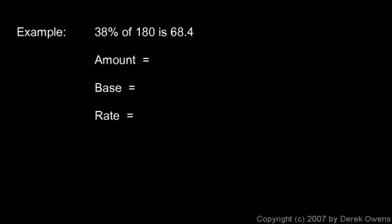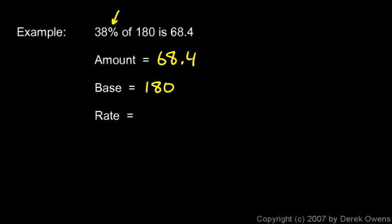Another one: 38% of 180 is 68.4. What is the amount? We're taking a part of 180, and that part is 68.4, so the amount is 68.4. The thing we're taking a part of is the base, so the base is 180. The rate is the percentage — we see the percent sign — so the rate is 38%.